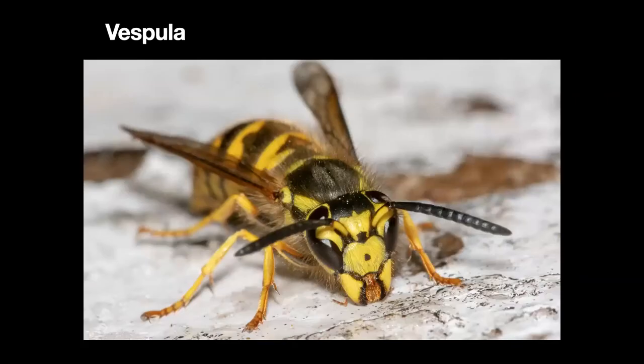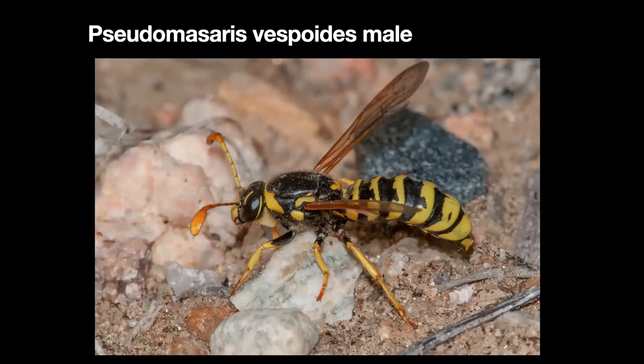Here's another picture of Vespula pennsylvanica for a better view — this one is simply sucking up fluid that has fallen on the ground from a hummingbird feeder. And here is yet another wasp that mimics the Vespids — Vespula. This is Pseudomasaris vespoides. I used to see these where I grew up in San Diego County in the Cuyamaca Mountains. This individual is photographed near Fort Collins, Colorado, on the edge of the Rocky Mountains. It's a male.